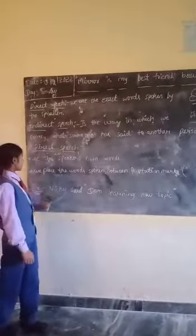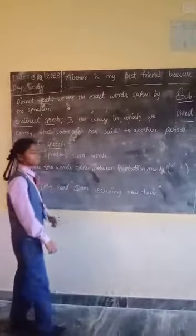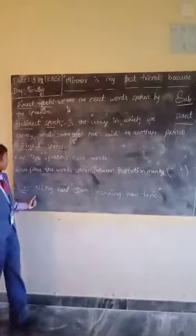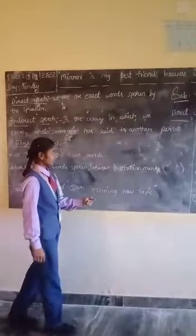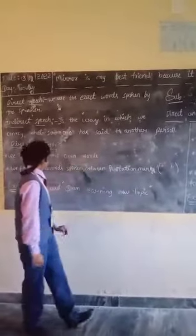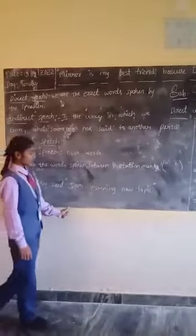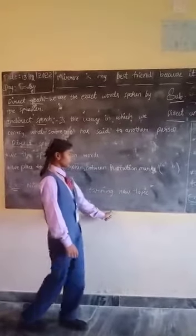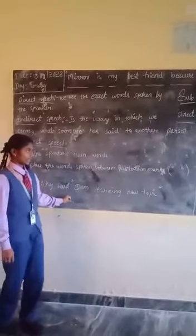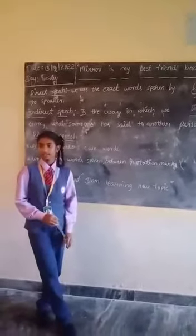In direct speech, we use the speaker's own words. We place the words spoken between quotation marks. For example: Nikki said, 'I am learning a new topic.' It is saying directly. I hope you have understood direct speech.